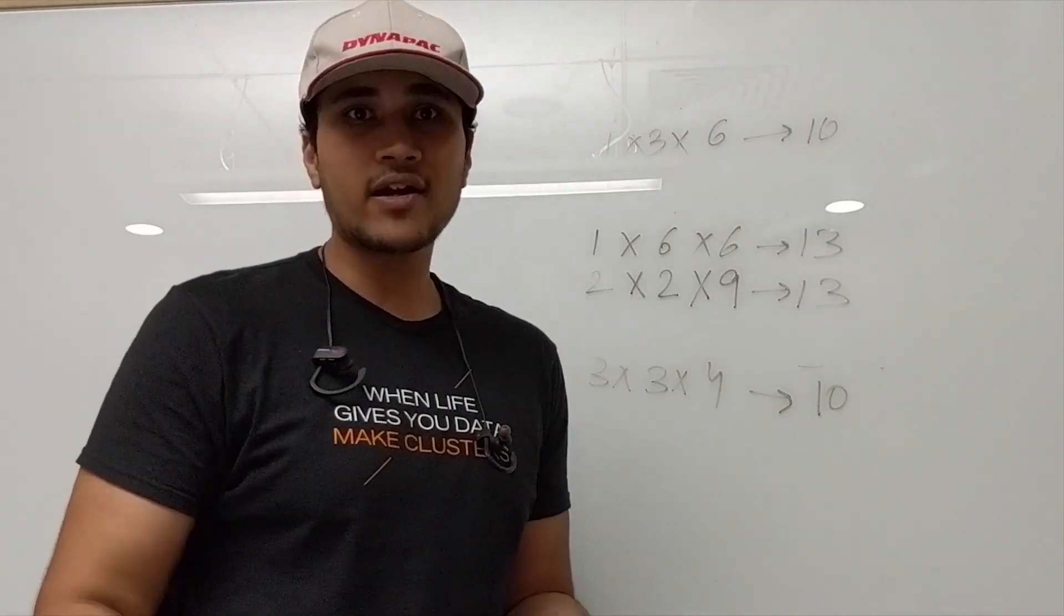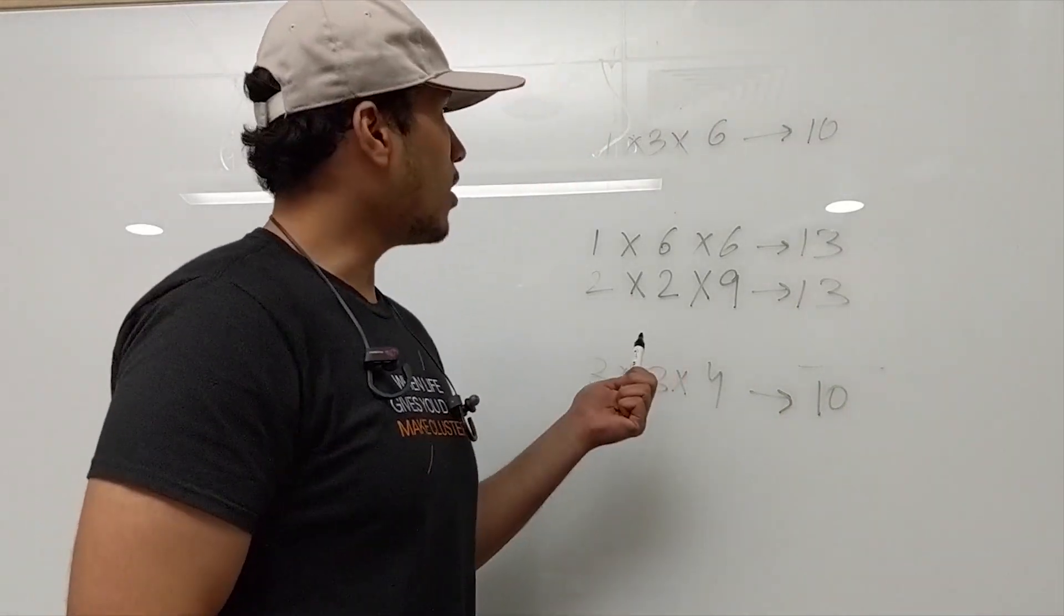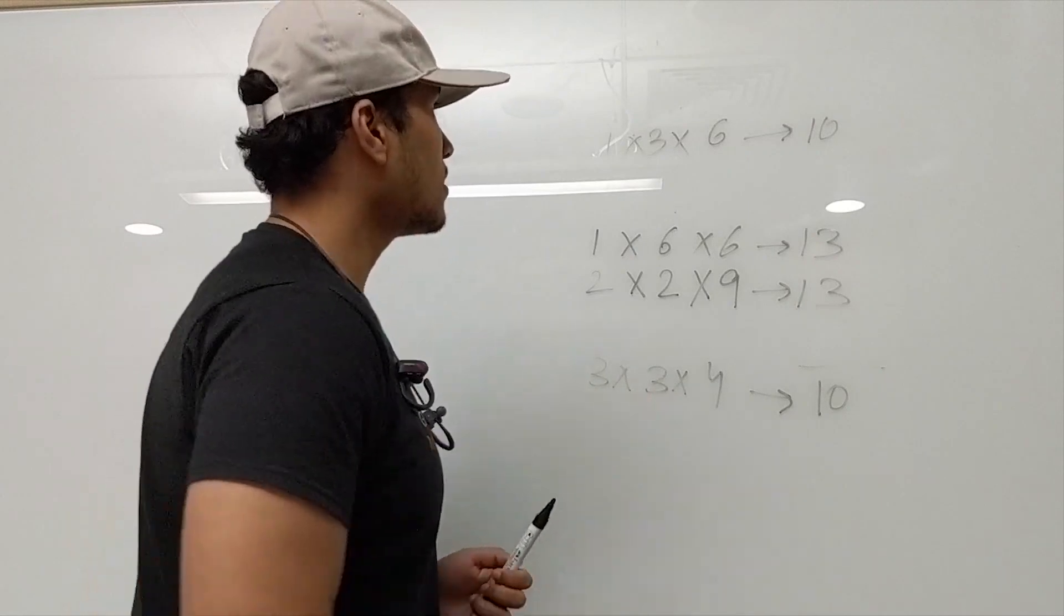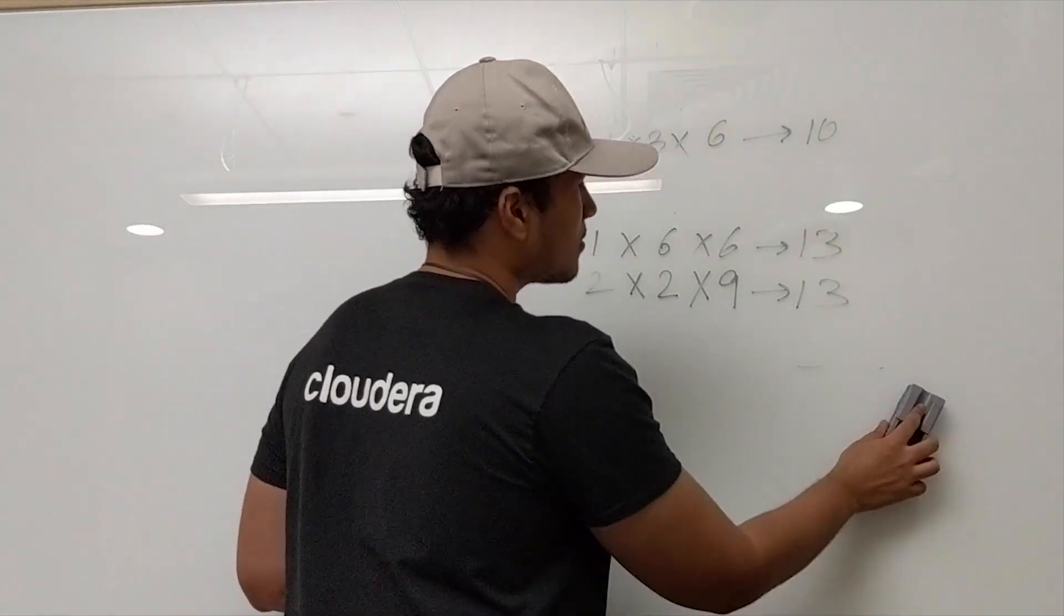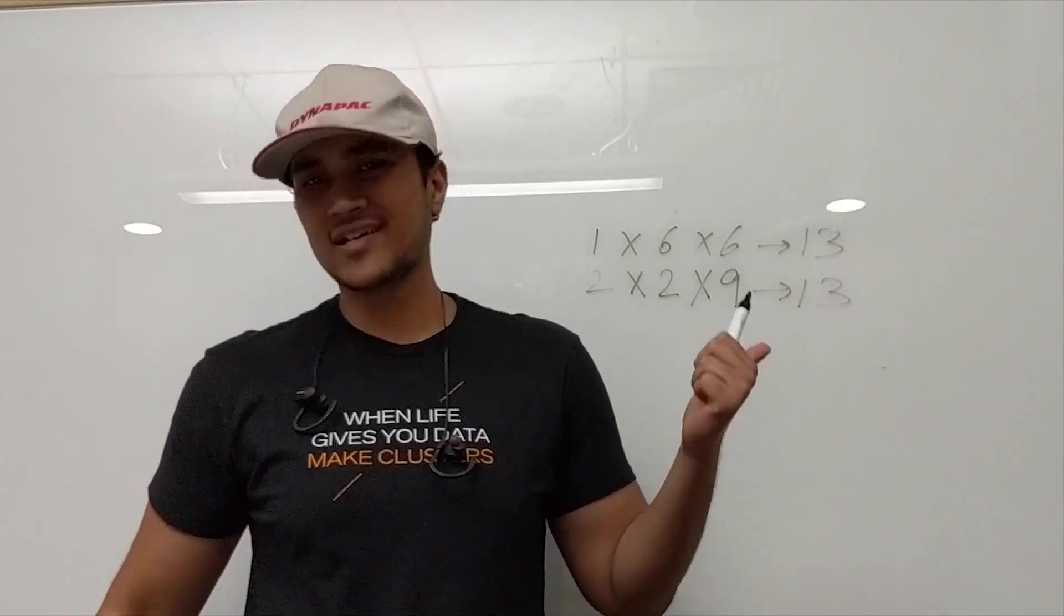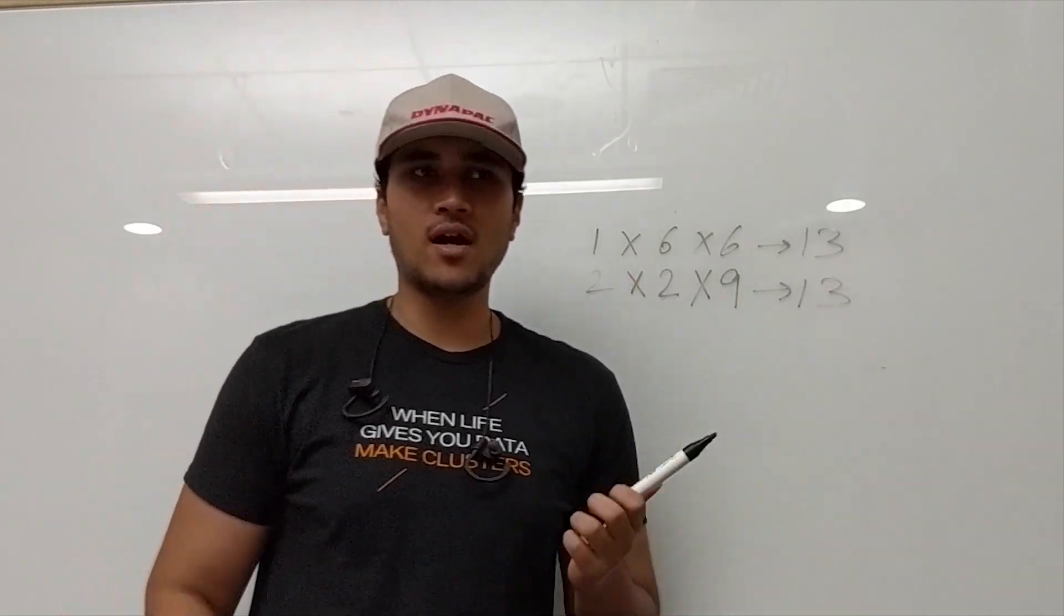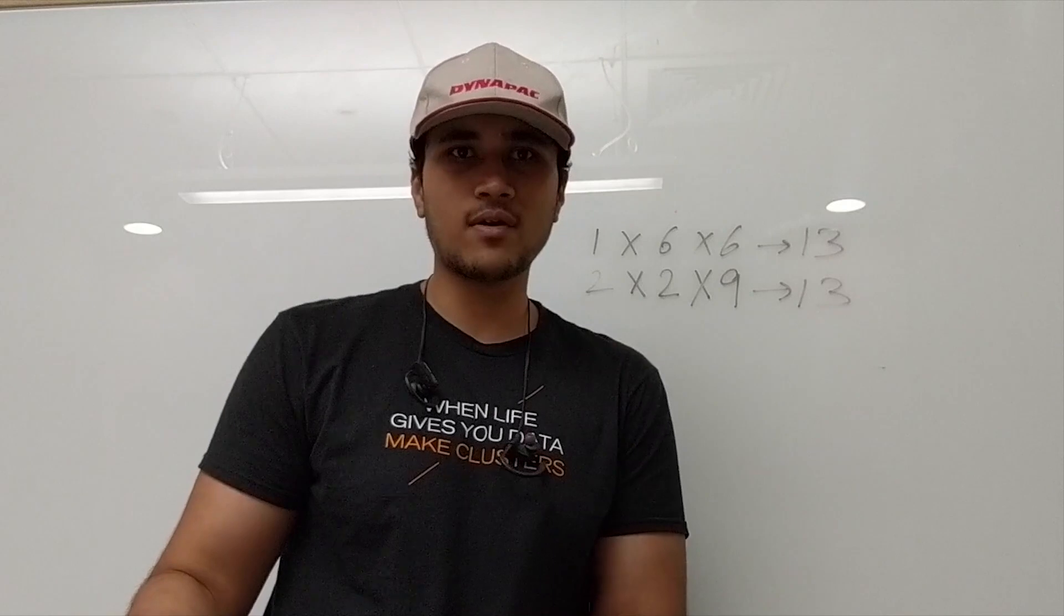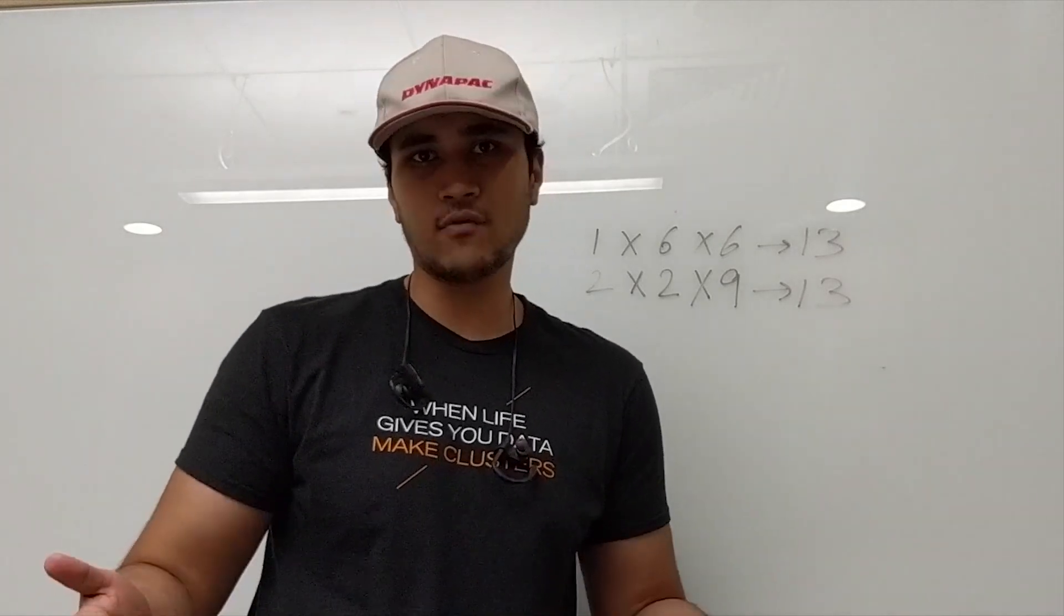And now since I have already seen the piece of paper what was written on that was 13. So let's also remove 10. So if you are confused, why did I remove 10 and not 13? It's because I already saw the black paper and on that 13 was written.